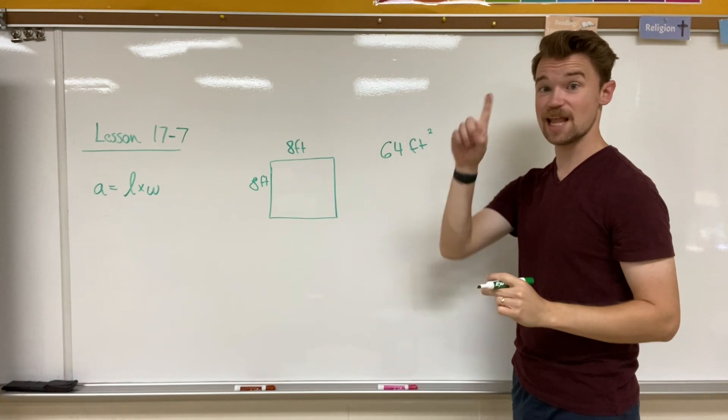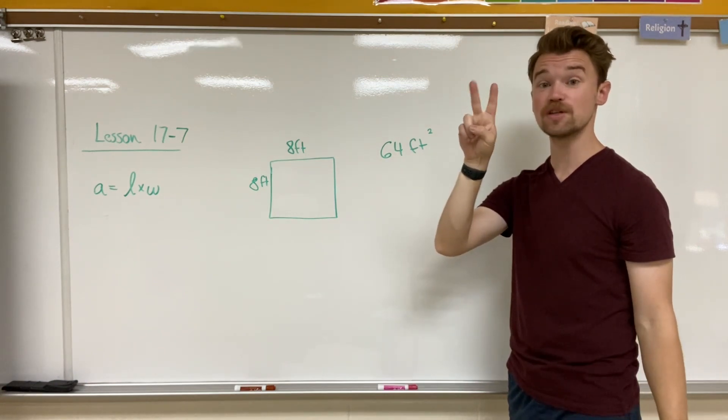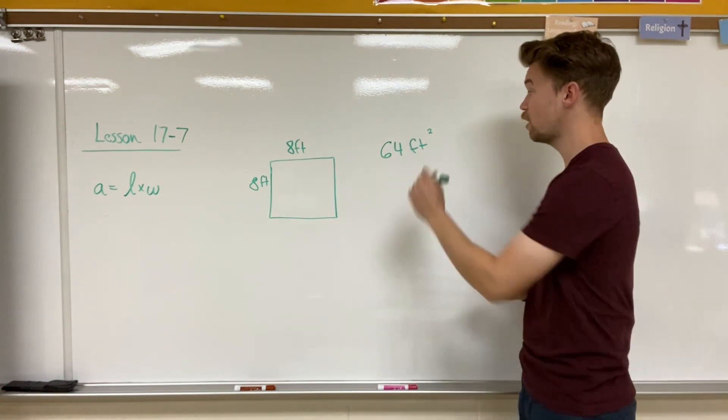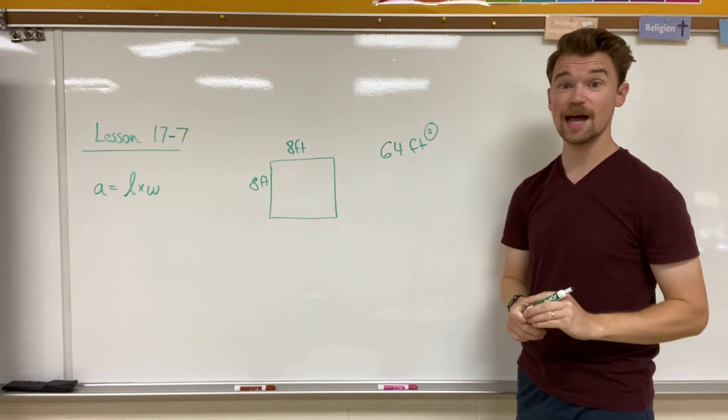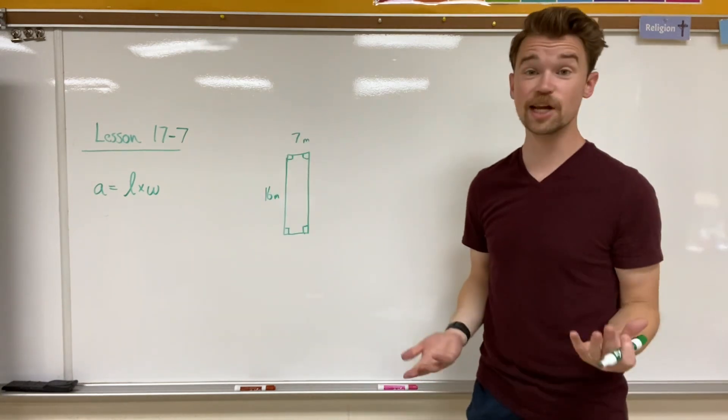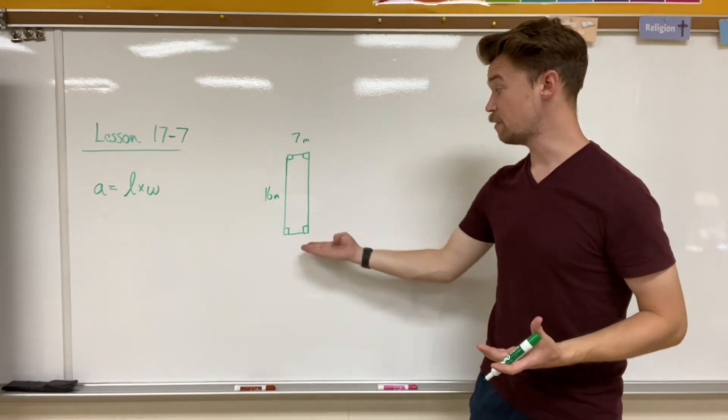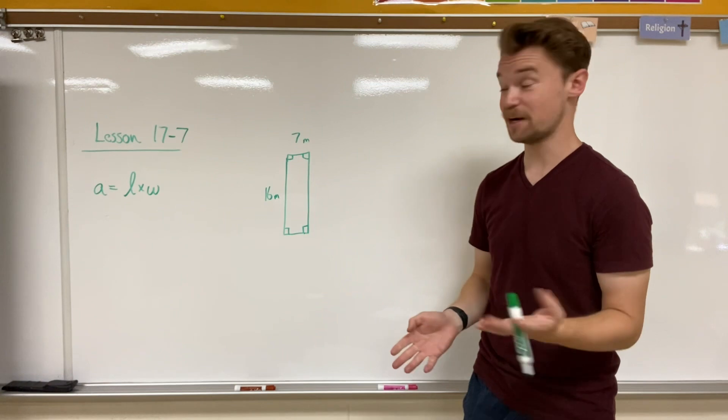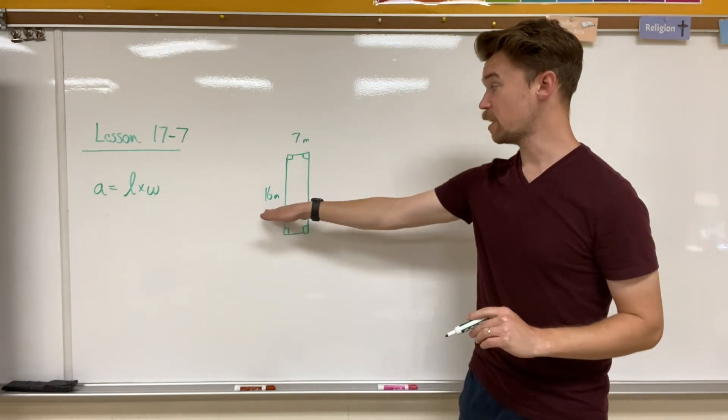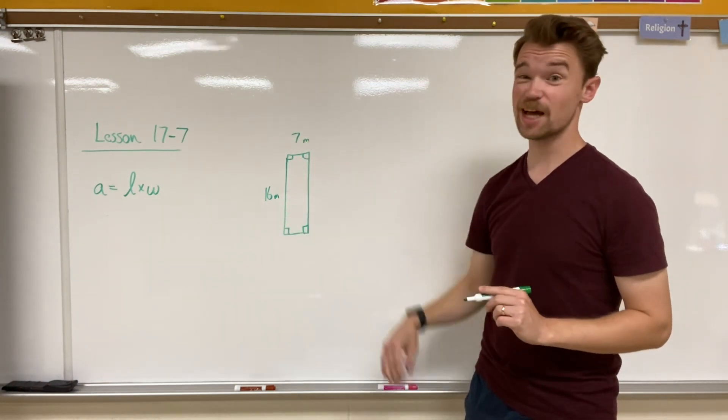Squared means that we're trying to find length and width. We're finding both dimensions. So we have to put our answer in square by using a small little number two as our exponent. Let's take a look at another example. I have another quadrilateral with right angles, possibly a rectangle, but I see that one of my sides is 16 meters. Another side is seven meters.